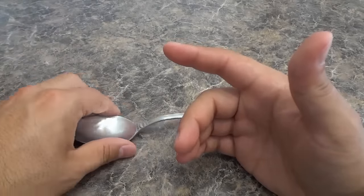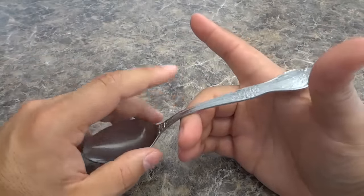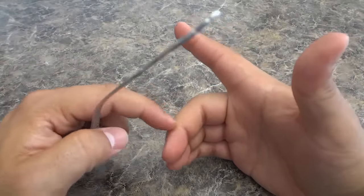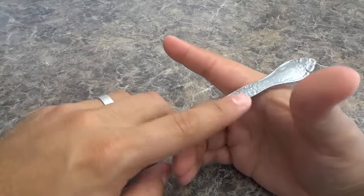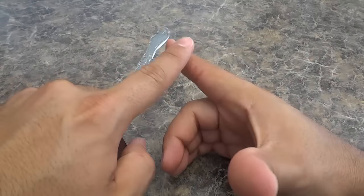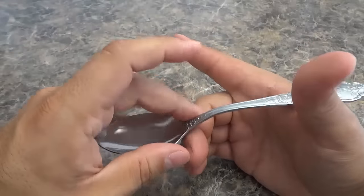So basically you're just gonna take the spoon and place it like this. It's gonna be resting on this part of your middle finger and it's also gonna be resting on this part between your index finger and your thumb just like that.